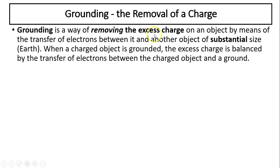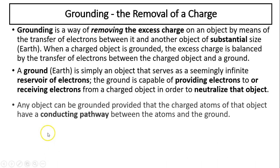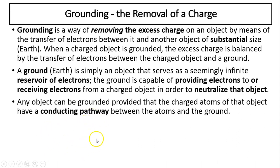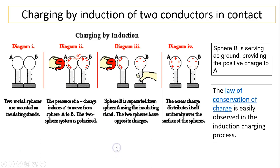Grounding removes all excess charge using the earth. Think of the earth as a sink — it can supply water and take water away. Similarly, it can supply charge and take charge away. To charge an object through grounding: first polarize, second ground to remove the charge, third remove your hand first and then remove the balloon — the object is then charged opposite to the balloon. Charging by induction of two objects: with two conducting spheres next to each other, instead of using your hand, you simply remove sphere B — both spheres become charged, and sphere B serves as the ground. The law of conservation of charge holds: before you had zero total charge, and after, the total system is still zero.